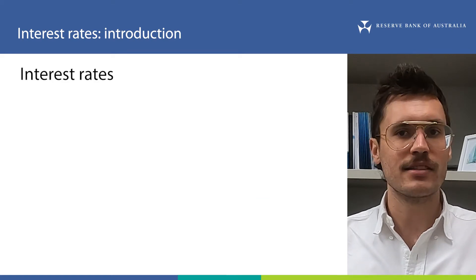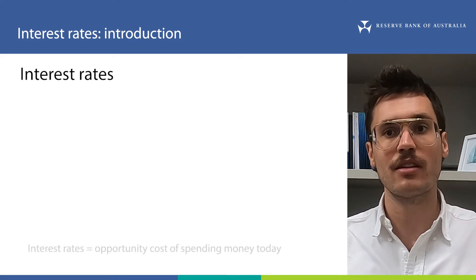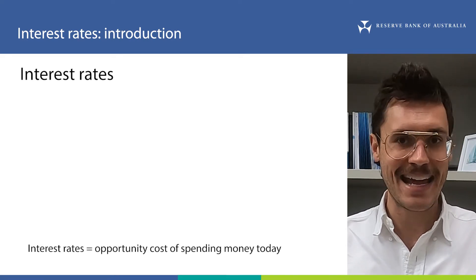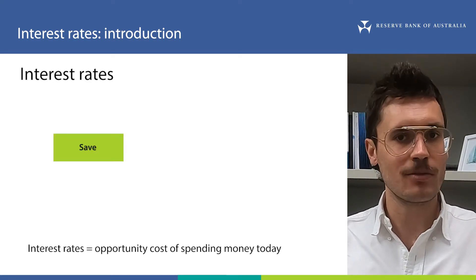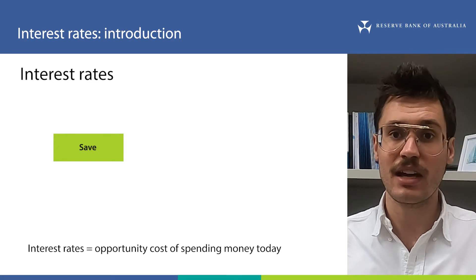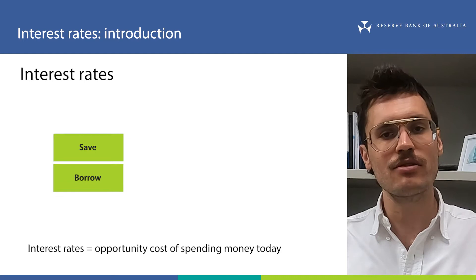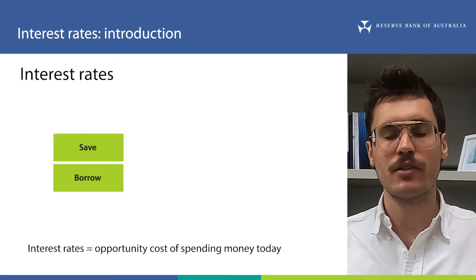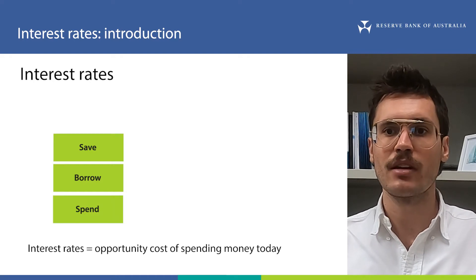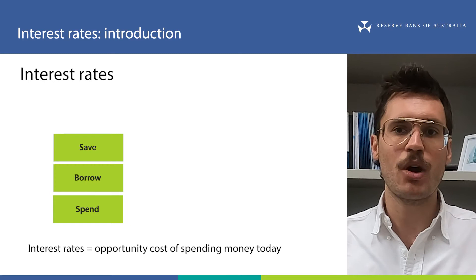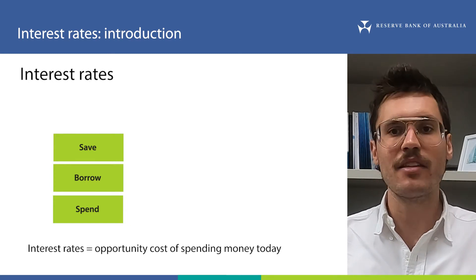So on to interest rates. If you recall from our introduction to monetary policy video, interest rates measure the cost of spending our money today. So if we're spending money that we could have saved, interest rates measure the lost opportunity to earn interest on those savings. If instead we're spending money we have borrowed, the interest rate measures the cost of borrowing that money. So if interest rates are lower, the cost of spending money today is lower. It is less attractive to save money, and it's cheaper to borrow it. This makes us more likely to spend our money today, rather than later on.